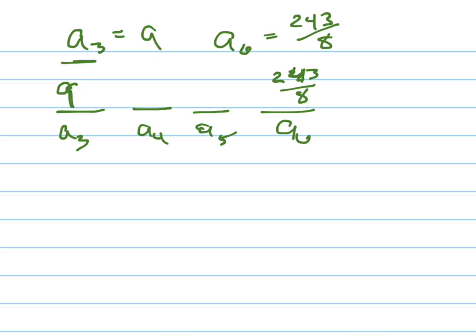So what did I do? Let me change color so you can see. What did I do to this? I multiply it by r one time. So this is 9 times r, this one is 9 times r squared, and this one is 9 times r cubed.